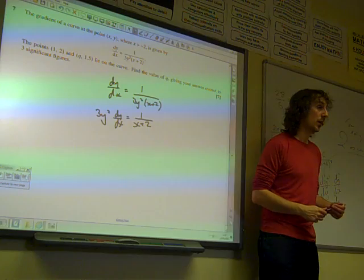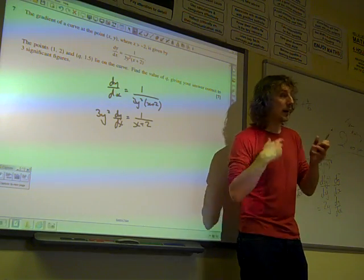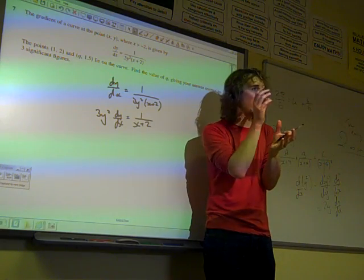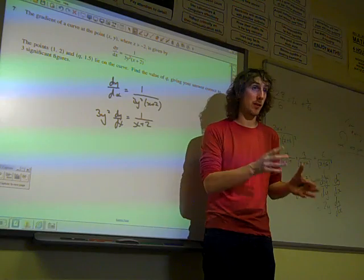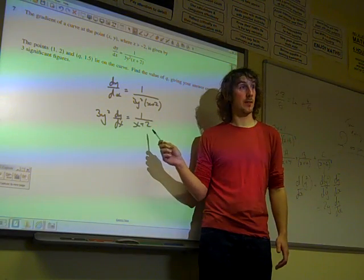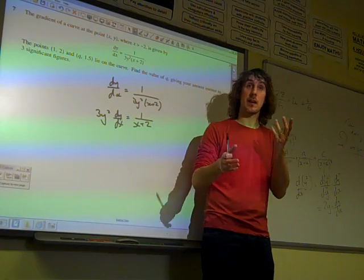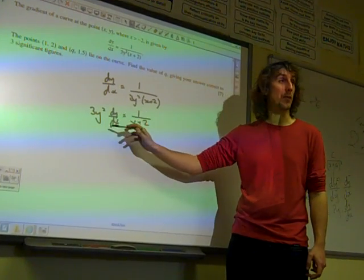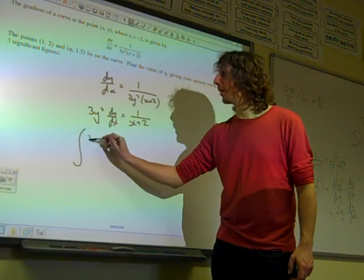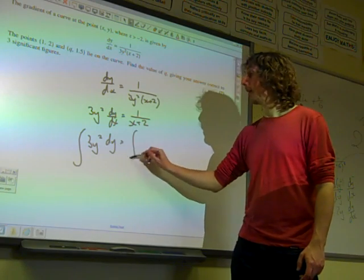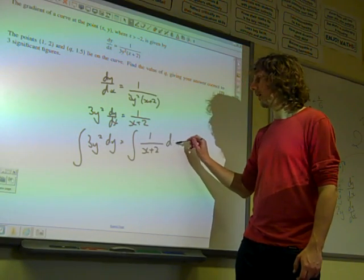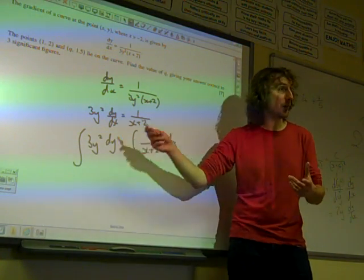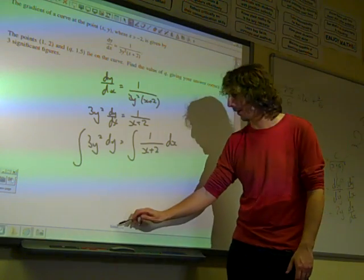At this stage, we're ready to integrate. Now, at this point, with Core 4 a couple of weeks away, I don't mind how you understand what we're doing with this. But in effect, what we're actually doing is we're integrating both sides with respect to x. Because you have to do the same thing to both sides of the equation. It just so happens that the dx's cancel out here to leave us with the integral of 3y² dy. It's the integral of 1/(x+2) dx. But it is worth knowing that actually what we've done is the same thing to both sides, because we must always do the same thing to both sides.